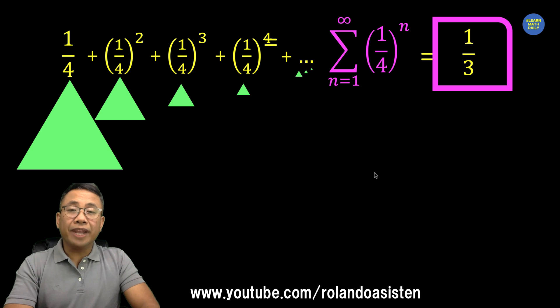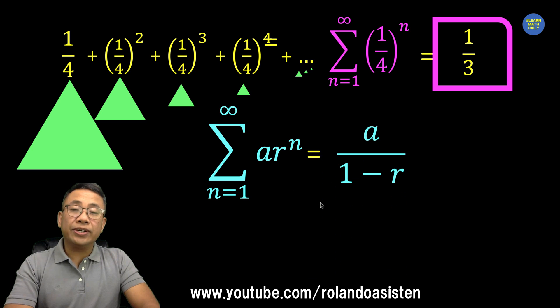Now if you are going to use a formula, we can now use this formula for the sum of infinite geometric series when the value of r is between 0 and 1. In our given series, a is 1/4 because that's our first term. Our r is 1/4 because the ratio of (1/4)² divided by 1/4 is 1/4. The ratio of (1/4)³ divided by (1/4)² is also 1/4. So the constant ratio is r.